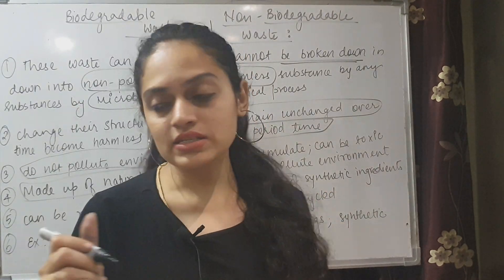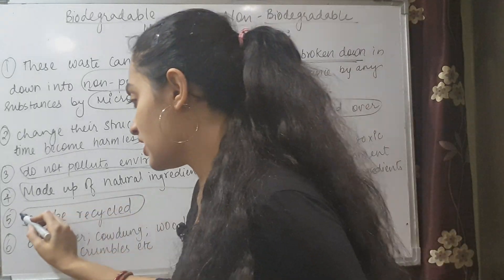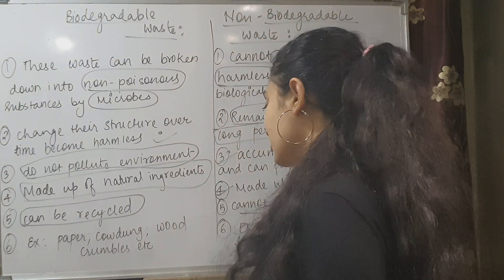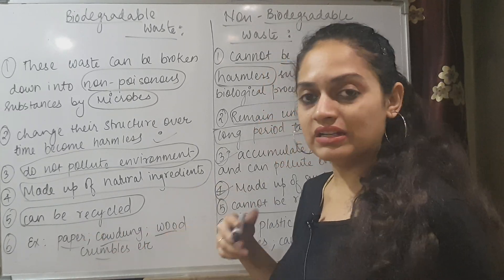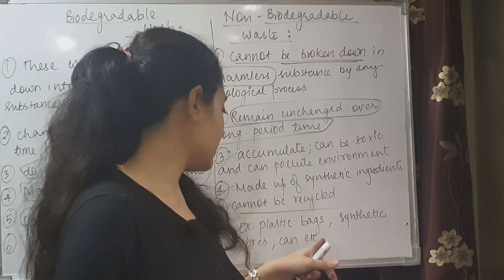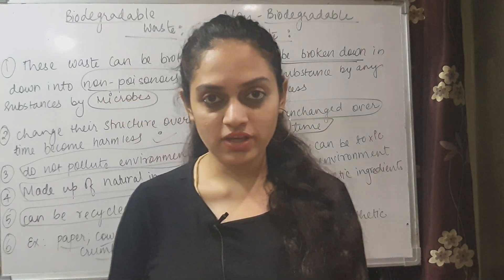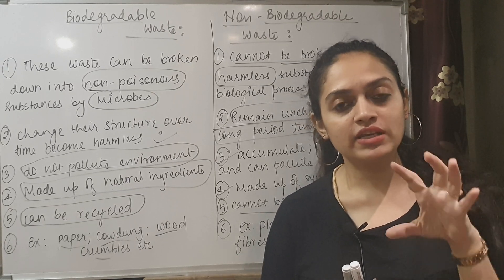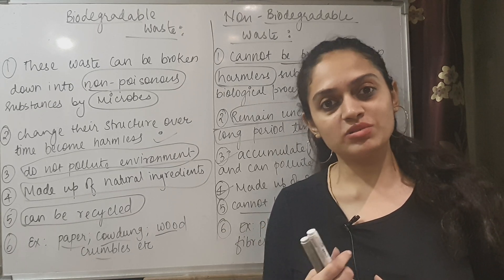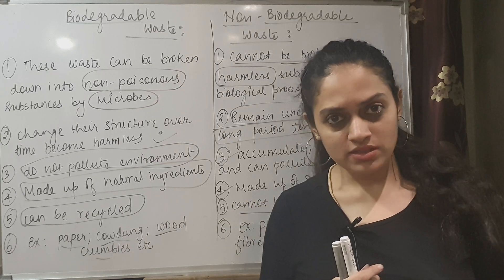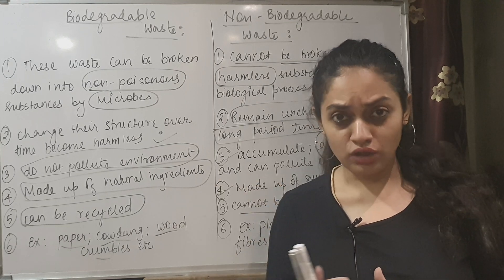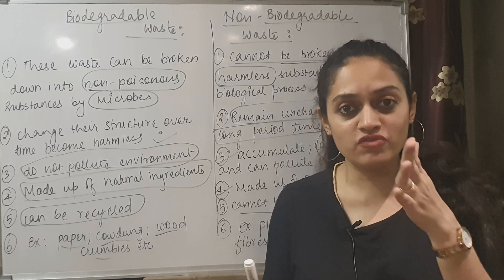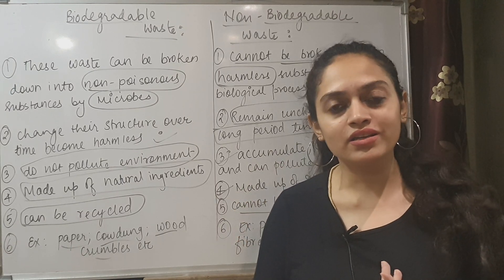Biodegradable waste can be recycled if you don't want to dump it. Non-biodegradable waste cannot be recycled. For waste disposal, there are separate dustbins: biodegradable waste is called wet waste and goes in the green bin, non-biodegradable substance is called dry waste, and medical waste goes in the red bin. We separate and treat waste so it cannot pollute our environment.